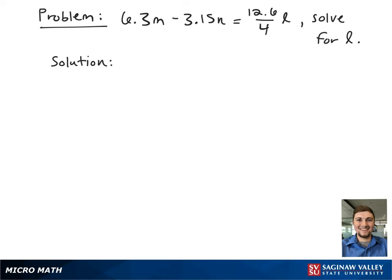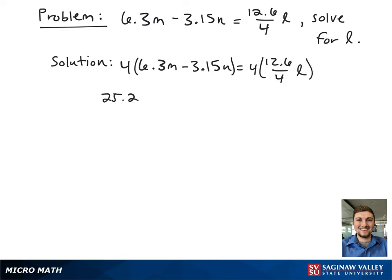Here we have the formula 6.3m minus 3.15n equals 12.6 over 4l, and we're asked to solve for l. After rewriting the equation, we're going to multiply both sides by 4 to get rid of the fraction on the right-hand side. This gives 25.2m minus 12.6n equals 12.6l.